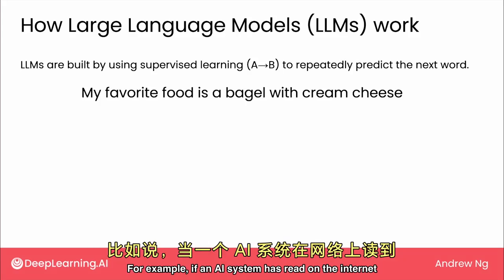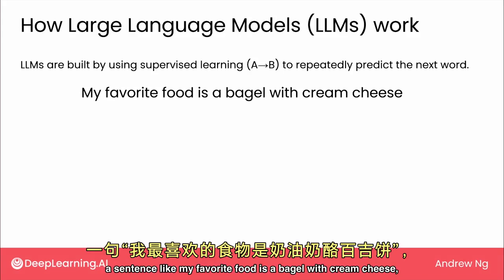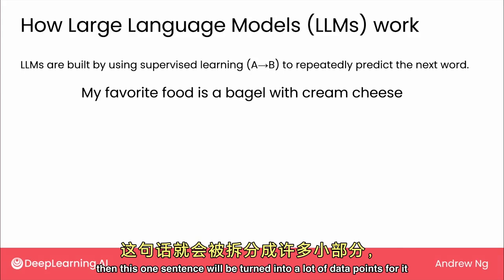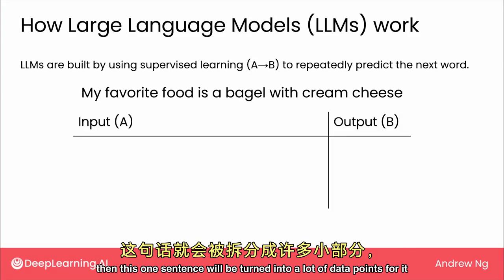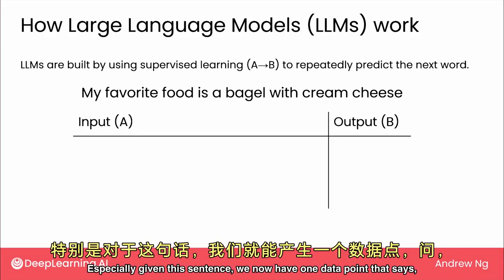For example, if an AI system has read on the internet a sentence like 'my favorite food is a bagel with cream cheese,' then this one sentence will be turned into a lot of data points for it to try to learn to predict the next word. Especially given this sentence,